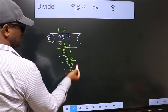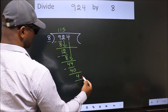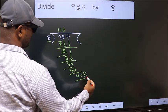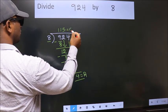No more numbers to bring it down. So, we stop here. This is our remainder. This is our quotient.